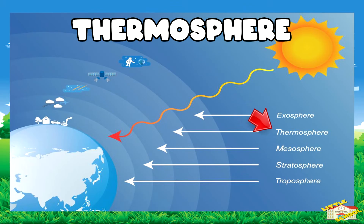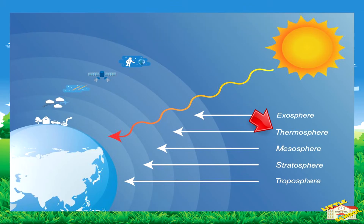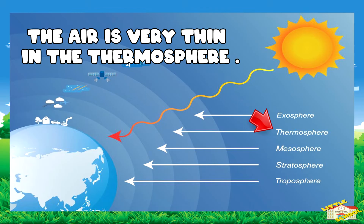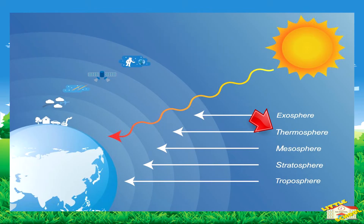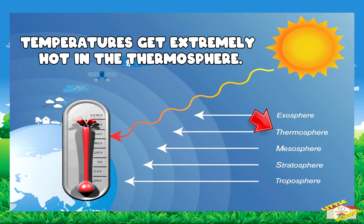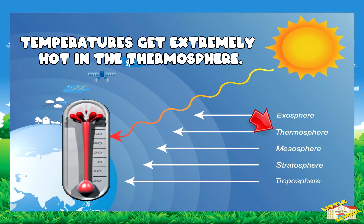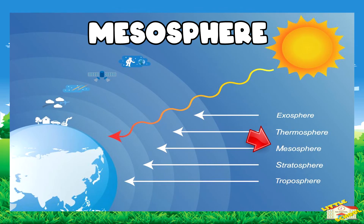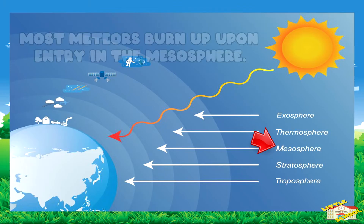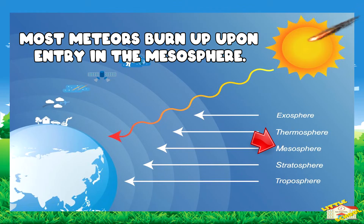The thermosphere is the next layer, and the air is very thin here. Temperatures can get extremely hot in the thermosphere. This is where most meteors burn up upon entry.